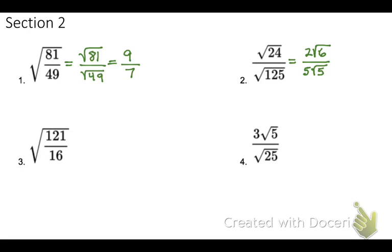So we multiply by the square root of 5 over the square root of 5, which is 1, and we're going to get 2 times the square root of 6 times the square root of 5 over 5 times the square root of 5 squared. And if you remember from class, the square and the root cancel each other out, so I end up with 5 times 5.